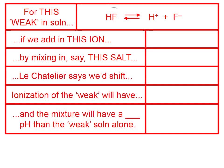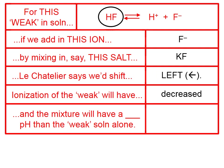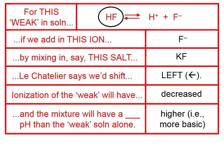Let's try one more. For this weak in solution, if we add in the fluoride ion — shown in the equation — by mixing in potassium fluoride, Le Chatelier says we'd shift to the left because we have a bunch more fluoride ion in the mix. The ionization of the weak will have decreased, and if we shift left, you're going to consume some of the hydrogen ion, which means the hydrogen ion concentration will decrease, which means the pH will be more basic — higher than it was when we just had the weak in solution by itself.